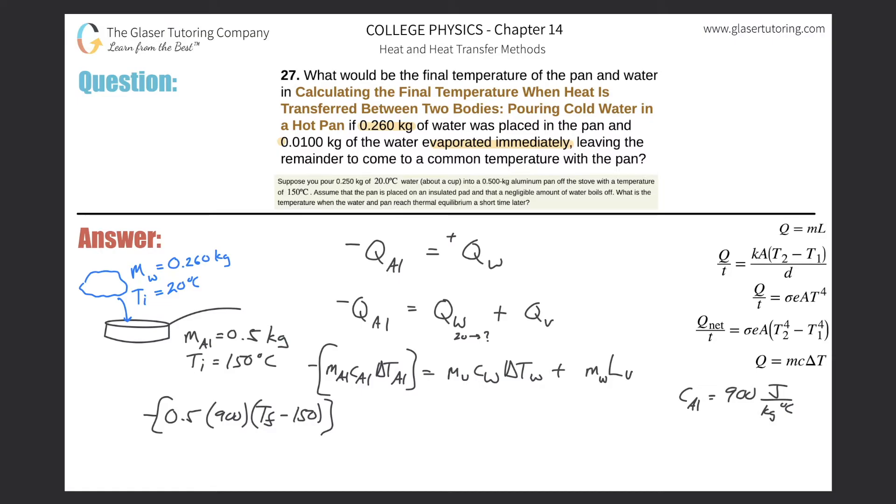This will equal now the mass of the water that changes temperature from 20 to something. Remember, that is not the 0.26 because right off the bat, as soon as this water was dumped in, we evaporated 0.01 kilograms. So technically you'd have to take the total amount of water 0.260 and subtract out the 0.01. Times the specific heat of the water, which is 4184, times the change in temperature at some final value minus the initial, which will be minus 20.